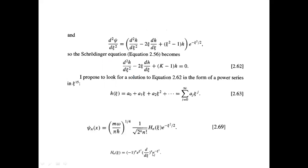The Hermite polynomials are generated by a specific expression. For a given n, you substitute the value of n into the power term and differentiate accordingly — for example, for n=2 you differentiate twice. This index n is what quantizes the solution, giving the allowed energy states of the quantum harmonic oscillator, where H_n is the Hermite polynomial and this is called the ladder relation.